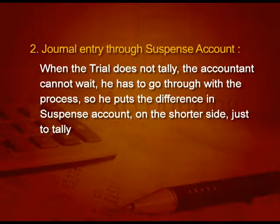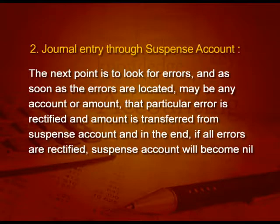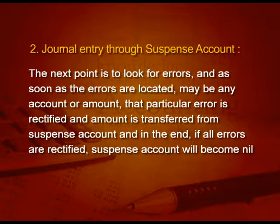Coming to the second way, that is journal entry through suspense account. When the trial does not tally and the accountant cannot wait, he puts the difference in a suspense account on the shorter side, just to tally the trial. Then he looks for the errors. As soon as the errors are located, that particular error is rectified and the amount is transferred from the suspense account. And in the end, if all the errors are rectified, suspense account will become nil.